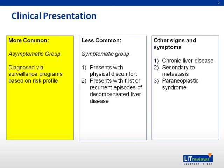Most patients who present with liver cancer are asymptomatic and are diagnosed based on surveillance programs for patients at risk. For others who present symptomatically, they typically present in two groups. The first group presents with physical discomfort, heaviness in the right upper quadrant abdominal region, right upper quadrant pain, or hepatomegaly noticed on examination. The other group presents with first or recurrent decompensated episodes of liver disease — typically with ascites, with or without pedal edema, with or without signs of obstructive jaundice, such as steatorrhea and tea-colored urine.